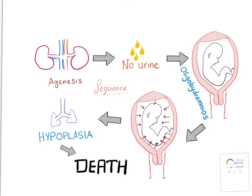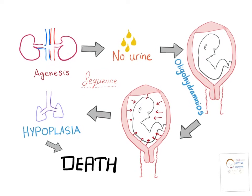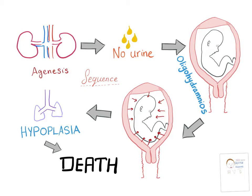A sequence is events occurring after one another — one thing leads to the other. So we start with renal agenesis: no kidneys. And what do kidneys produce? Urine. No kidney means no urine.